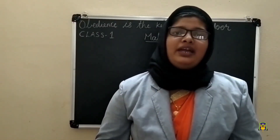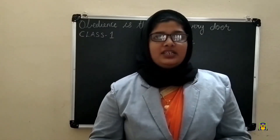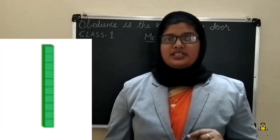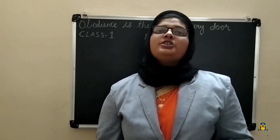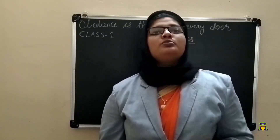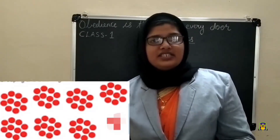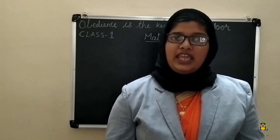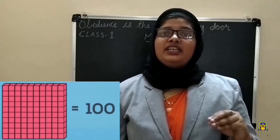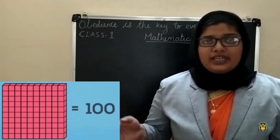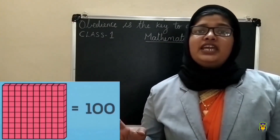Good morning to all. Welcome back to your maths class. We already studied that one group of 10 is 10, two groups of 10 is 20, three groups of 10 is 30, four groups of 10 is 40, five groups of 10 is 50, six groups of 10 is 60, seven groups of 10 is 70, eight groups of 10 is 80, nine groups of 10 is 90, and ten groups of 10 is 100.